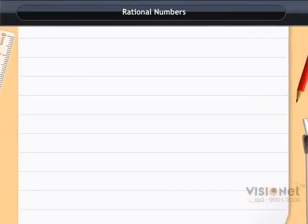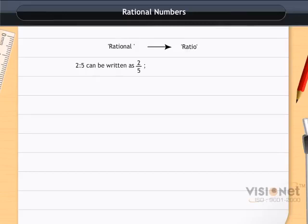Rational numbers. The word rational arises from the term ratio. We know that a ratio like 2 is to 5 can also be written as 2 by 5, where 2 and 5 are natural numbers.